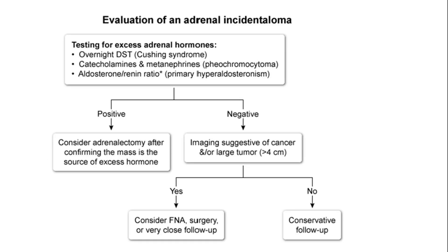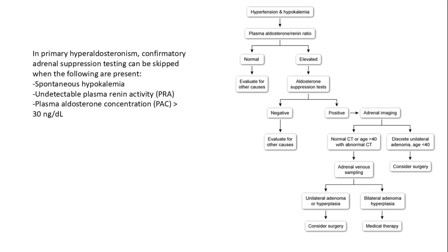Evaluating an adrenal incidentaloma involves testing for excess adrenal hormones. If no hormone secretion, further imaging or surgical intervention may be necessary to rule out cancer or manage hormone excess. If a patient has hypokalemia with high blood pressure, we do plasma aldosterone-to-renin ratio. If high, we do a confirmatory aldosterone suppression test. If not suppressed, hormone is being released from the adrenals. We then do imaging followed by adrenal venous sampling to help determine the need for surgery or medical therapy.